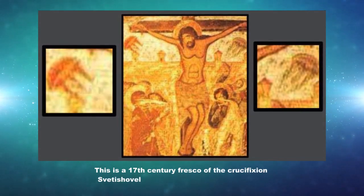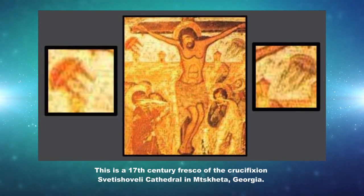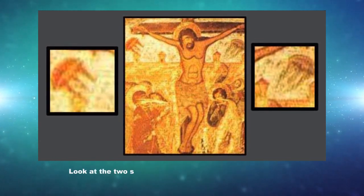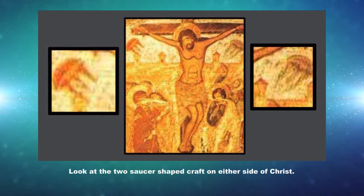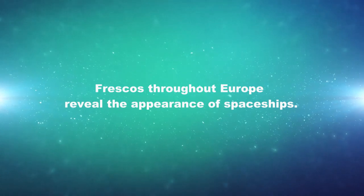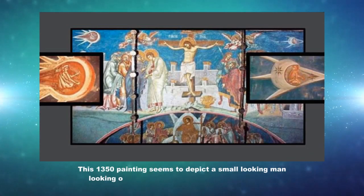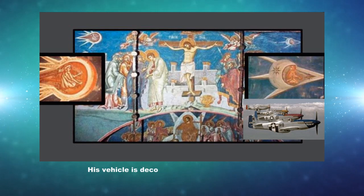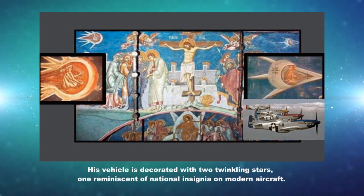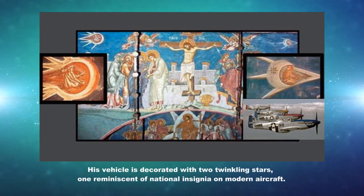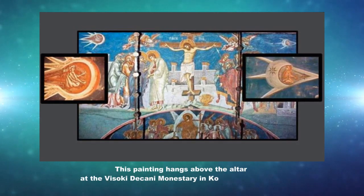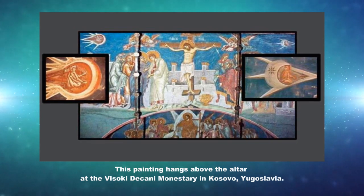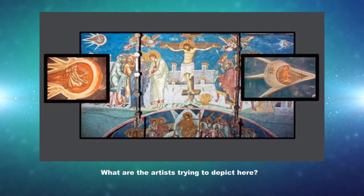Jesus' Crucifixion Paintings: this is a 17th century fresco of the Crucifixion at Svetitskhoveli Cathedral in Mtskheta, Georgia. Look at the two saucer-shaped craft on either side of Christ. Frescoes throughout Europe reveal the appearance of spaceships. This 1350 painting seems to depict a small-looking man looking over his shoulder at another flying vehicle. His vehicle is decorated with two twinkling stars, one reminiscent of national insignia on modern aircraft. This painting hangs above the altar at Visoki Dečani Monastery in Kosovo, Yugoslavia. What are the artists trying to depict here?